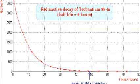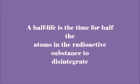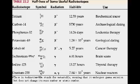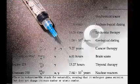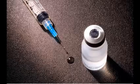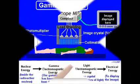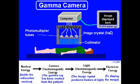It is used most commonly because it has a half-life of six hours. A half-life is the time for half the atoms in the radioactive substance to disintegrate. Having six hours as a half-life is perfect for diagnostics because some other radioisotopes have half-lives that are a lot longer. The way it works is that the technetium-99m is extracted and then put into a serum, which is a diagnostic agent.